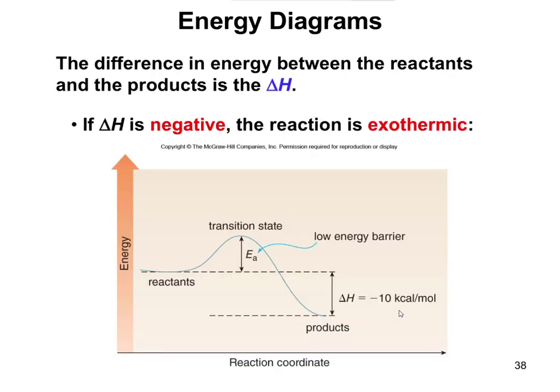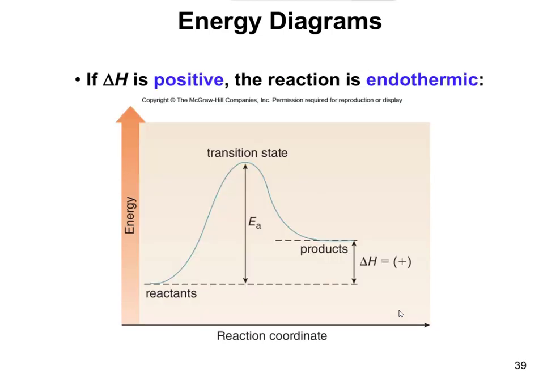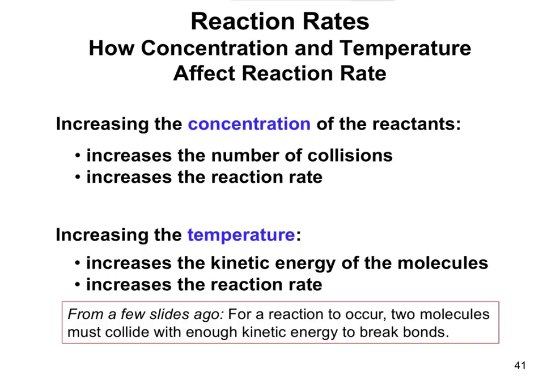If delta H is negative, the products are lower than the reactants — exothermic. If delta H is positive, the products are higher — endothermic. Reaction rates can be determined by the height of the activation energy. To surpass that activation energy, molecules have to collide with enough energy. You can increase collisions by increasing the concentration of the reactants.